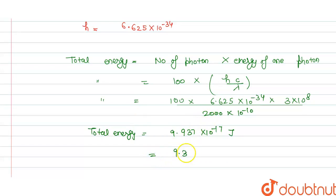So we have to multiply this by 9.937 multiplied by 10 power minus 17 divided by 1.6 into 10 power minus 19.